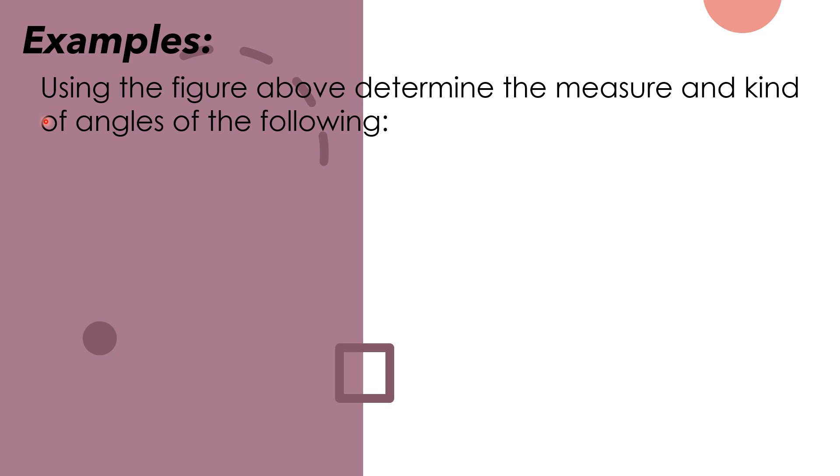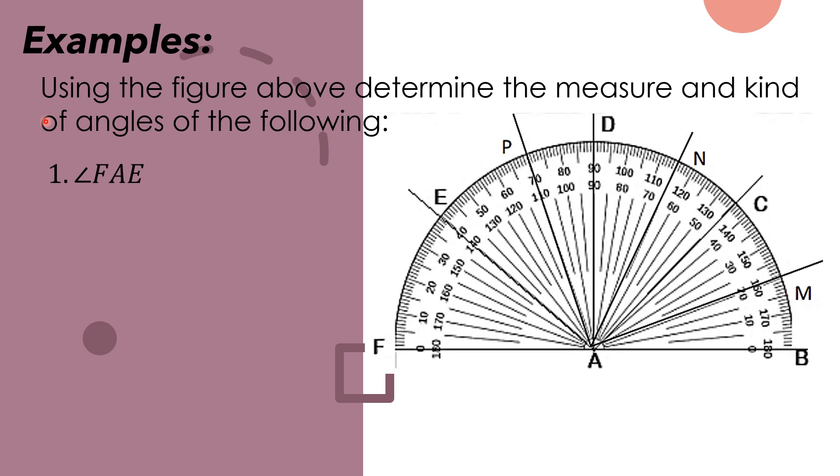So let's have the examples. Using the figure above, determine the measure and kind of angles of the following. Number one, angle FAE. We have the given protractor. Since the given, one letter is F, we use AF and then AE.